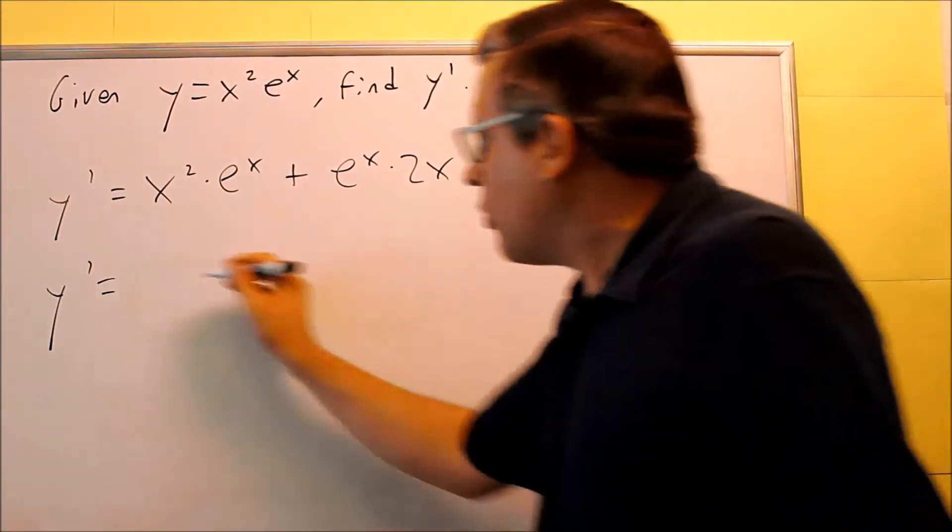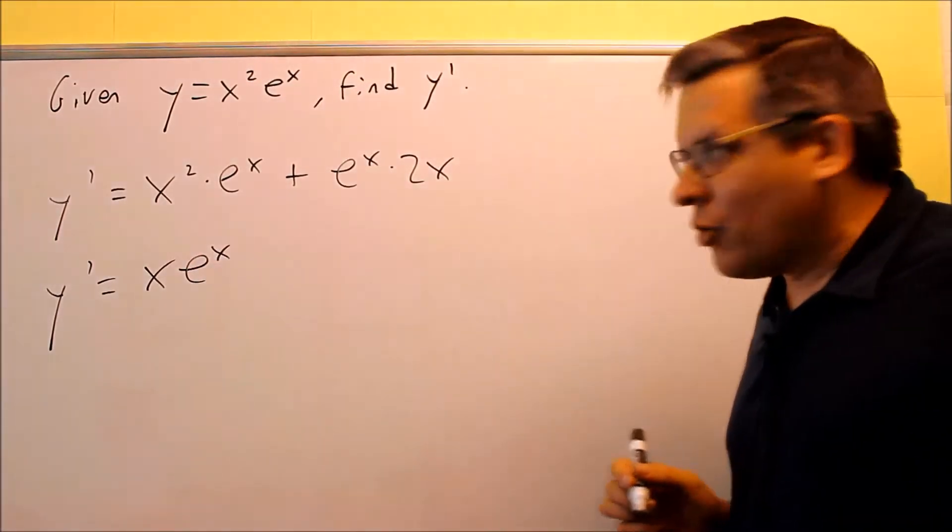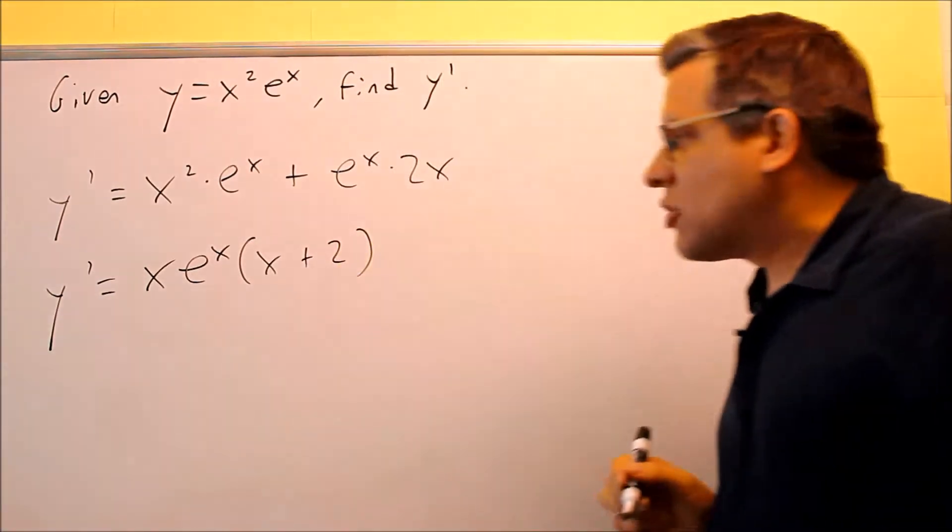So you can pull out, first of all, there's an x that's common in both of those. There's also an e to the x that's common in both of those. And then what's left over is going to be x plus 2.